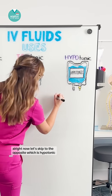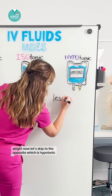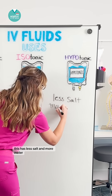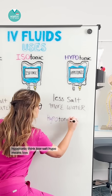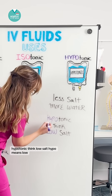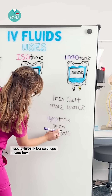Now let's look at the opposite, which is hypotonic. This has less salt and more water. Think of the memory trick: hypotonic — think low salt. Hypo means low.